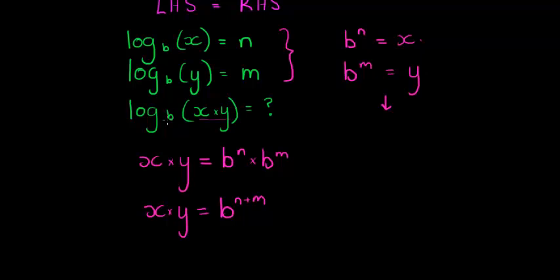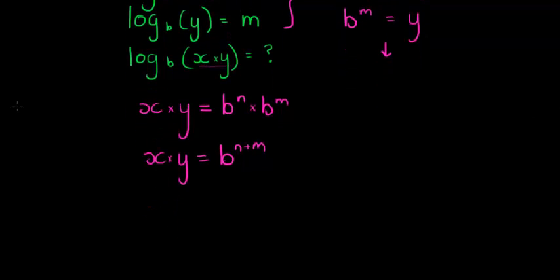If I ask b, what exponent must I give you to get x times y? And look here, b to the power of n plus m gives us x times y. Does that make sense? So if we were to answer this question that we had here, log of b, x times y, in other words, b, what exponent must we give you to get x times y? And he will answer based on this, you must give me the exponent n plus m.